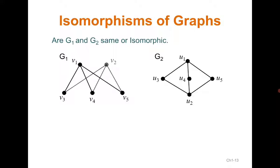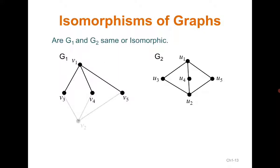If you look closely, you will find that if you put V2 down in G1, it would look exactly like G2. Based on this, we can say that G1 and G2 are isomorphic. They have different drawings, but the connections, the number of vertices, edges — everything is the same. So isomorphism means same number of vertices, same number of edges, and same connections.